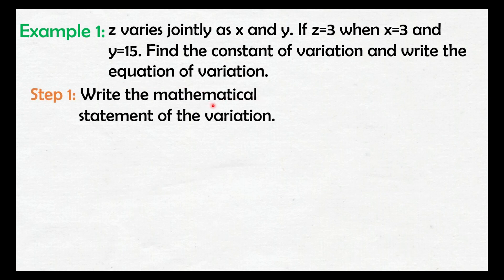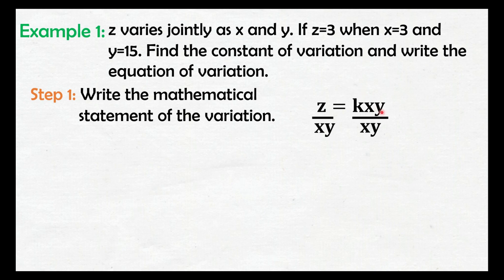Step one: write the mathematical statement of the variation. Z varies jointly as X and Y — unang nabanggit si variable Z, siya yung nasa left side. Kapag nakakita na tayo ng 'jointly,' ibig sabihin yung mga variables na susunod dyan ay pagmamultiply natin, kasama yung constant. So yung mathematical statement natin dyan ay Z equals KXY. Huling nabanggit itong X and Y kaya nasa right side sila, kasama si constant. Pwede natin i-divide both sides ng equation ng XY para makuha natin yung equation for constant. Kapag di-divide natin ng XY, ma-isolate na lang si K dito — makakancel kasi ito. So, Z over XY siya. K equals Z over XY — yun yung equation natin for constant.